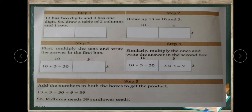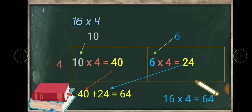Let's look at another example. Here the question is 16 into 4. Find the product of 16 and 4. The multiplicand is 16 and the multiplier is 4. The multiplicand has 2 digits, so we need to draw 2 columns, and the multiplier has only 1 digit, so we need only 1 row. We can write the multiplier on either side.